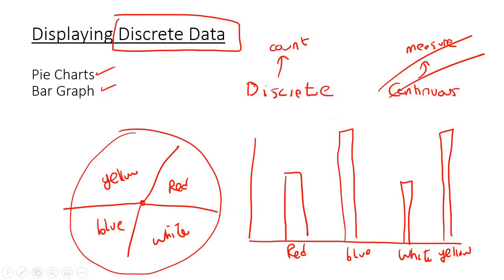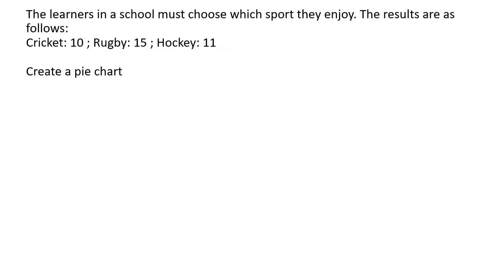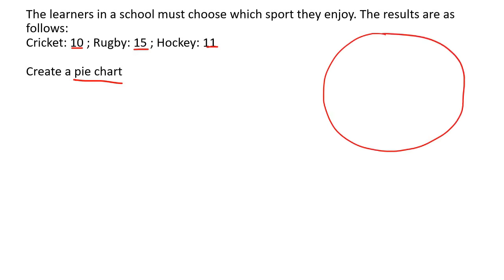Here is our first example. The learners in a school must choose which sport they enjoy. The results are: 10 people enjoy cricket, 15 rugby, and 11 enjoy hockey. Create a pie chart. When you think of pie chart, think of a circle. A circle is 360 degrees all the way around, so remember that — we're going to have to use 360.